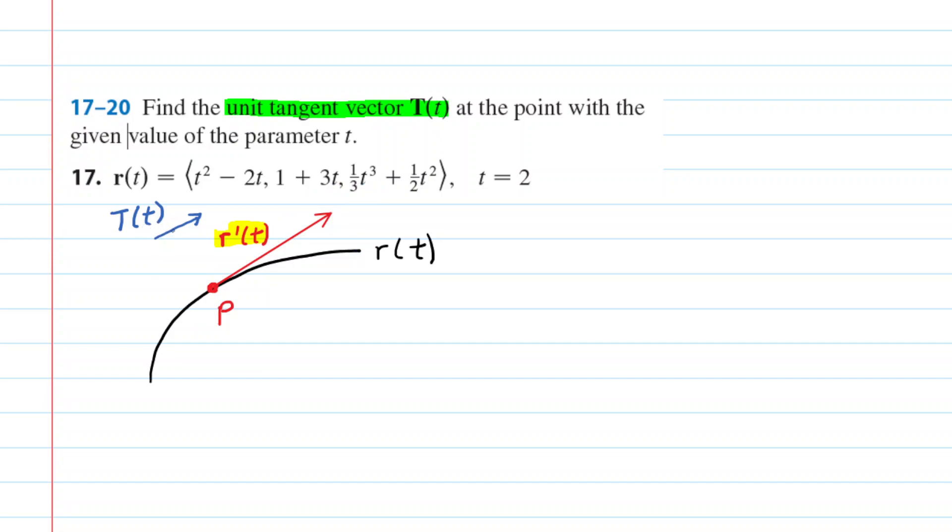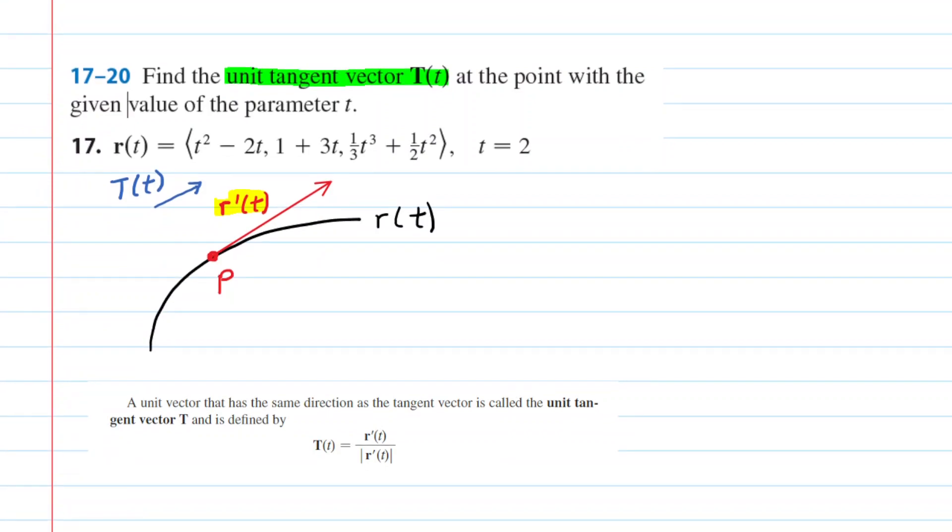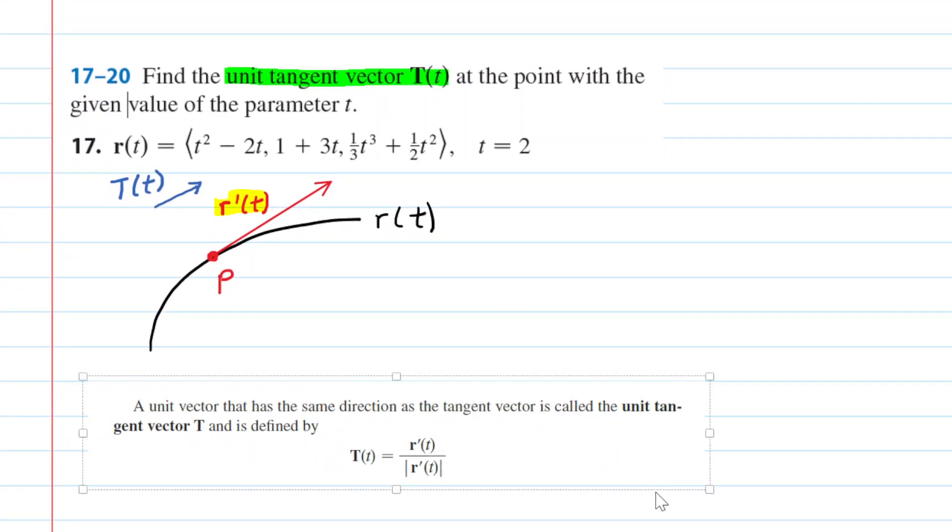And so how do we find it? Well, here is a presentation from your textbook. We can read the definition again. A unit vector has the same direction as the tangent vector. And here is how we find it. You might remember how to find any unit vector. You take that vector and then divide by the magnitude of the vector. So that is exactly what we're going to do here.